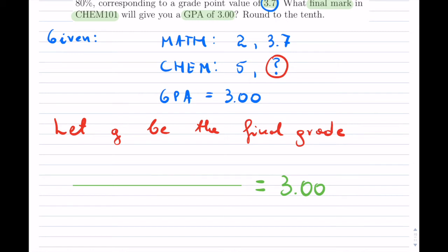So now on top, I will go one by one and add the courses. So I will have math, which is 2 times 3.7 plus the chemistry, which is 5 times the grade G, which I don't know. At the bottom, don't forget that you have to divide by the total number of credits. And that's your equation.